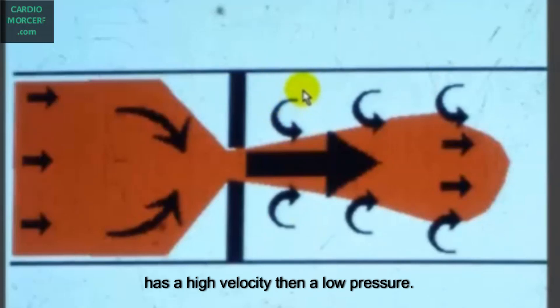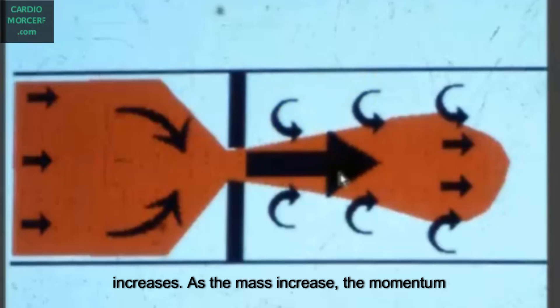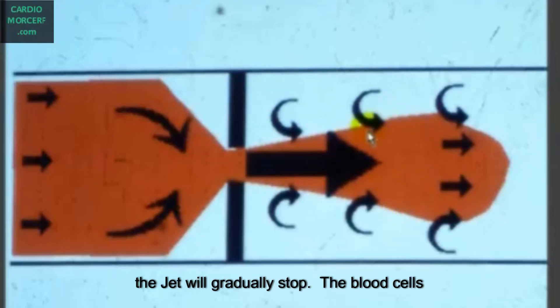Notice that a jet has a higher velocity than a low pressure. When the jet enters a cavity with higher pressure, the blood cells are pushed toward the jet. Some enter the jet, and the mass of the jet increases. As the mass increases, the momentum conservation law says that the mass-time velocity has to be conserved. If the mass increases, the velocity has to decrease, and the jet will gradually stop.